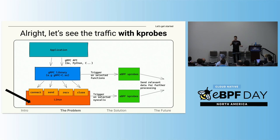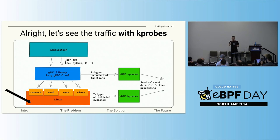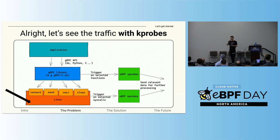The first solution that eBPF brings to the table is using kprobes — kernel probes. They can be attached to kernel functions, including system calls, and there we have access to the arguments to these functions. For example, we could attach probes to the send and receive system calls and have access to their arguments. This will basically provide us everything going in or out of the container, and this is really powerful. It is used this way to monitor a lot of different protocols like HTTP.